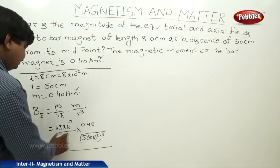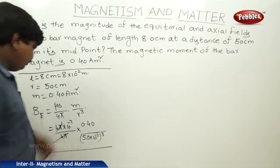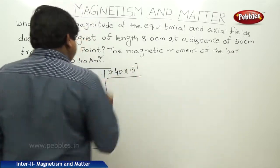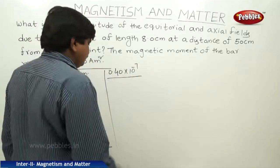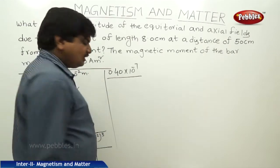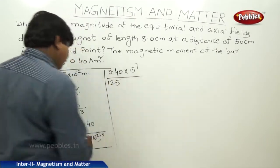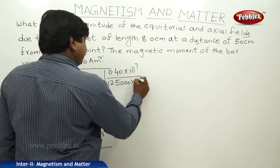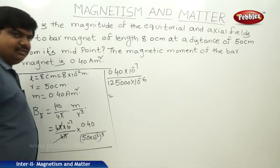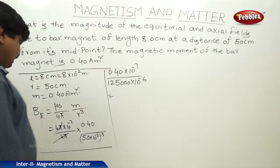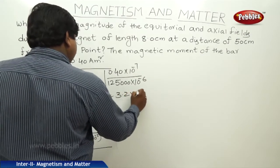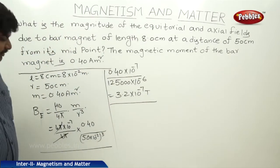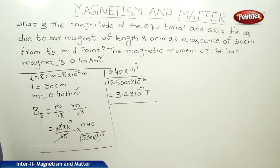After cancelling and simplifying, we get 0.40 into 10 to the power of minus 7 divided by 125 into 10 to the power of minus 6. Simplifying these values, we get B_E equal to 3.2 into 10 to the power of minus 7 tesla.